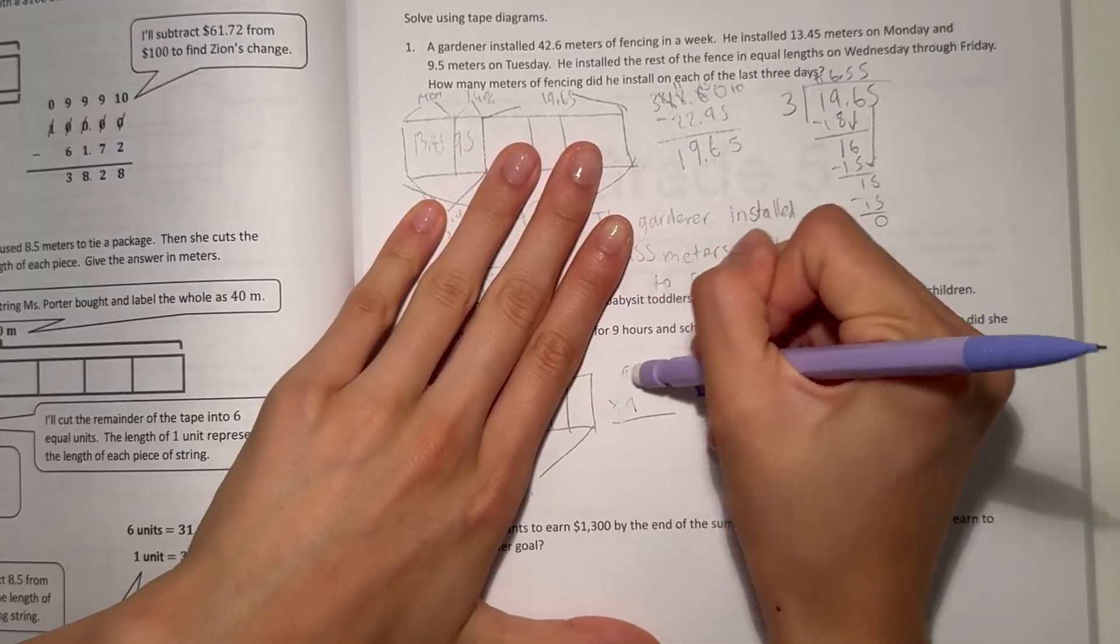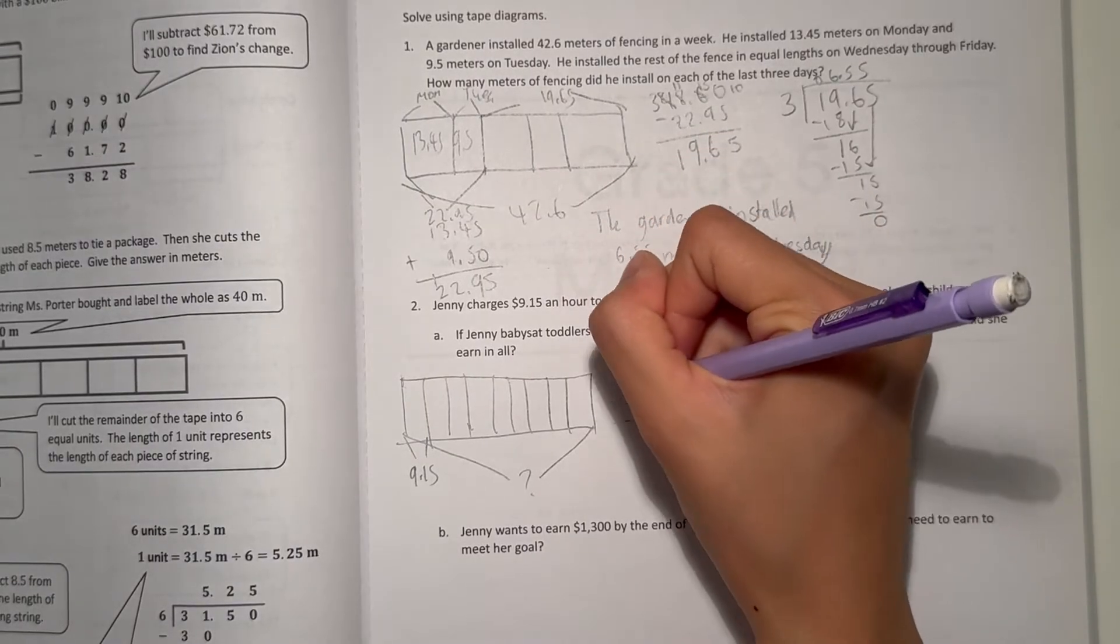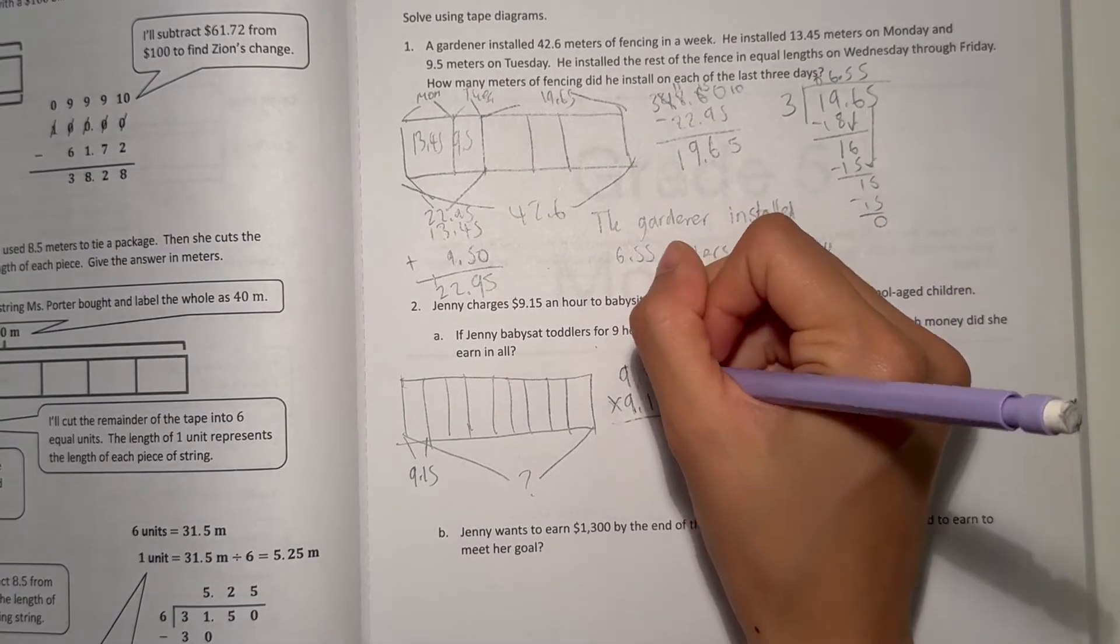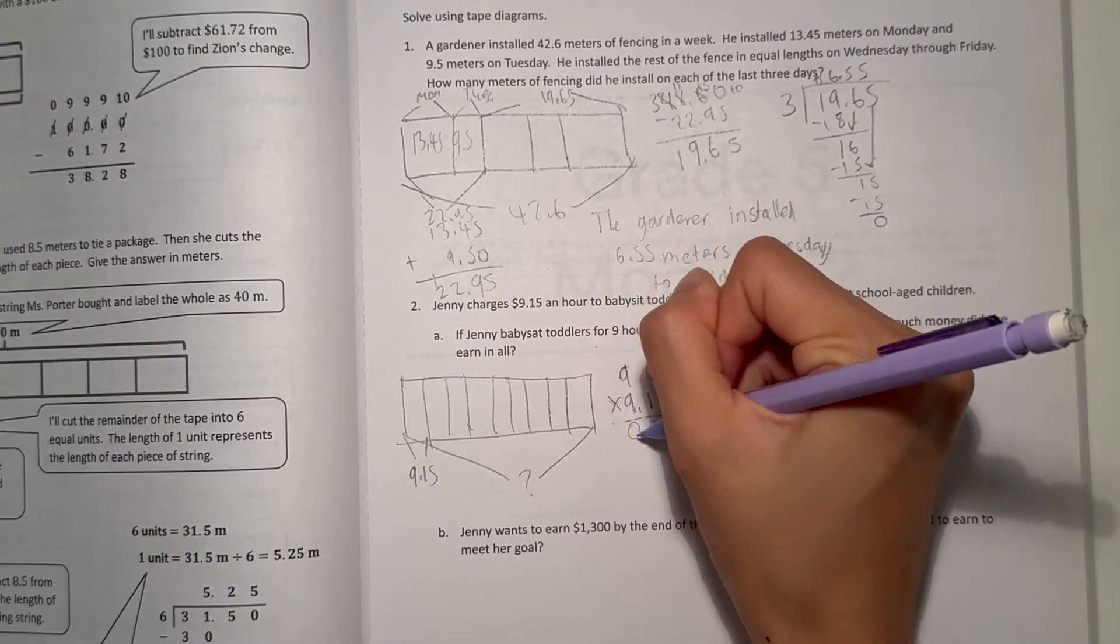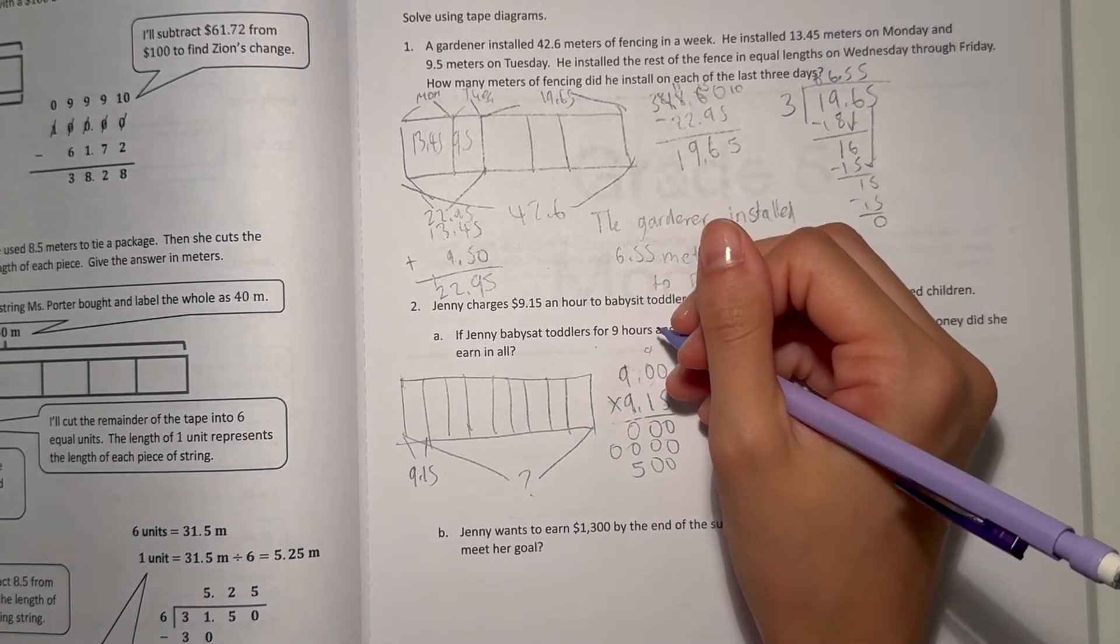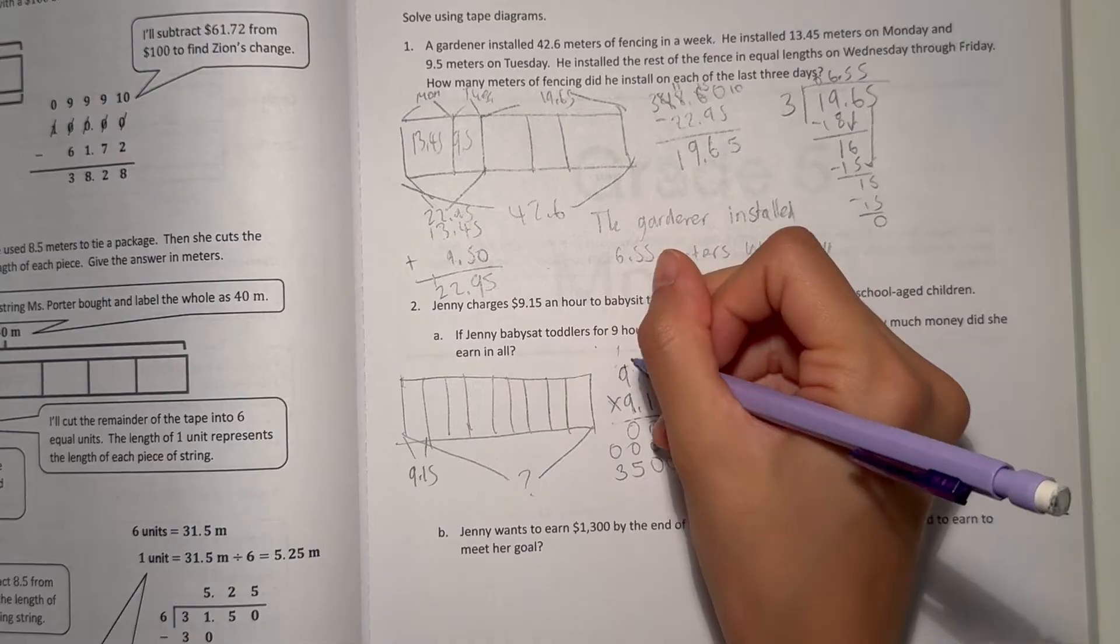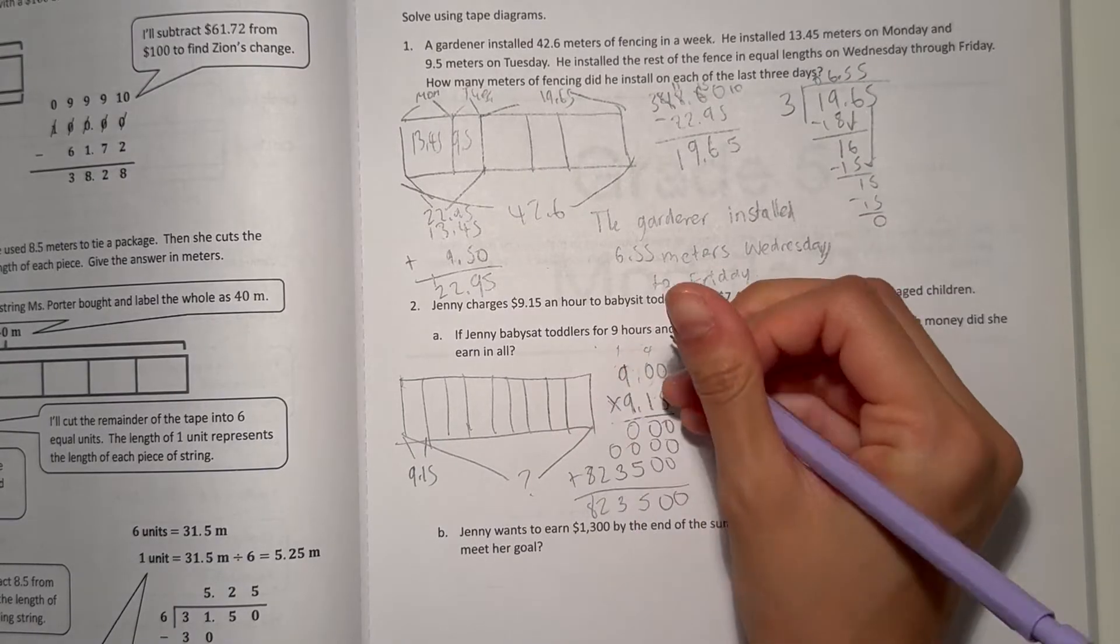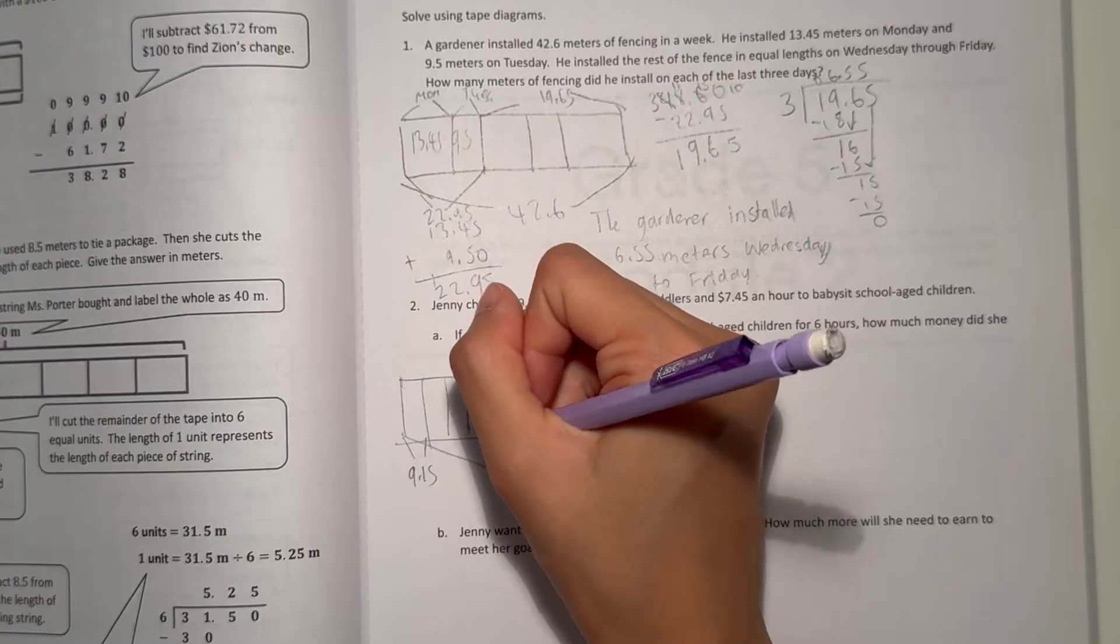9 times 9.15: 9 times 5 is 45, 9 times 1 is 9 plus 4 is 13, and 9 times 9 is 81 plus 1 is 82. So all that together: 82.35. So she makes $82.35 babysitting toddlers.